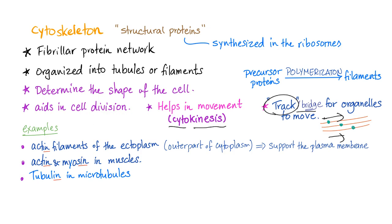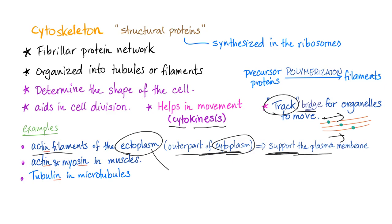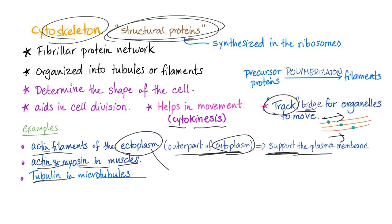We have examples such as actin filaments of the ectoplasm. What is the ectoplasm? Ectoplasm is the outer part of the cytoplasm — it provides structural support for the cell membrane. Actin and myosin in muscles, tubulin in microtubules. If you pay close attention, all of them end in '-in': actin, tubulin — that's why all of these cytoskeleton components are proteins.